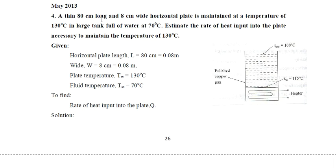Here is the first numerical: a thin 80 cm long and 8 cm wide horizontal plate is maintained at a temperature of 130°C in a large tank full of water at 70°C. Estimate the rate of heat input to the plate necessary to maintain the temperature of 130°C. The plate temperature is 130°C and water temperature is 70°C, so heat is being transferred to the water. We need to find how much heat must be supplied to the plate.